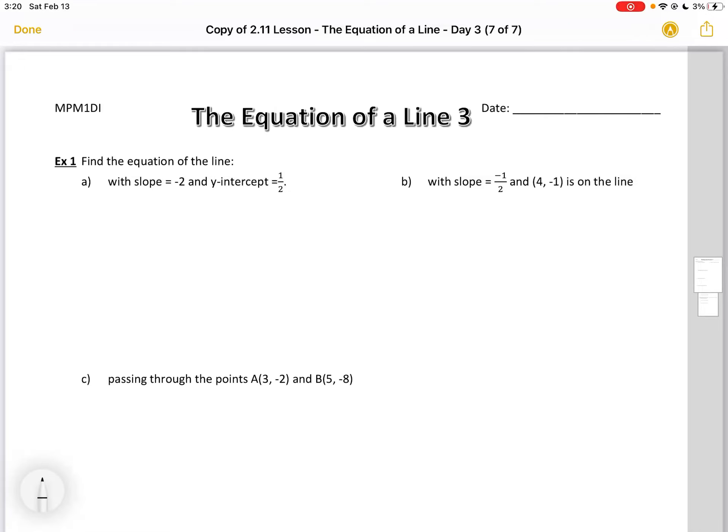This video goes over some more examples of finding the equation of a line. In example A, I'm going to find my slope, which is given to me in the question. I'm going to find my y-intercept, which is also given to me in the question. And then I'm going to write my equation as y equals mx plus b.